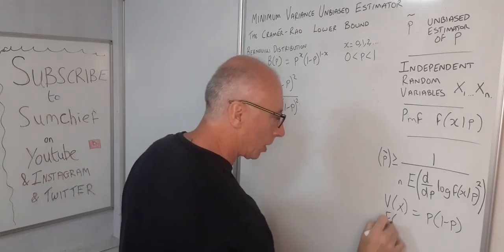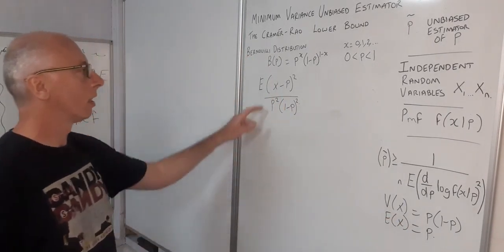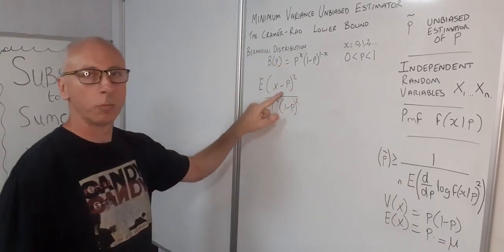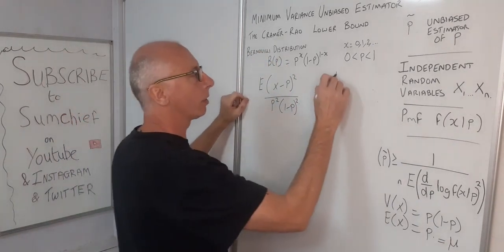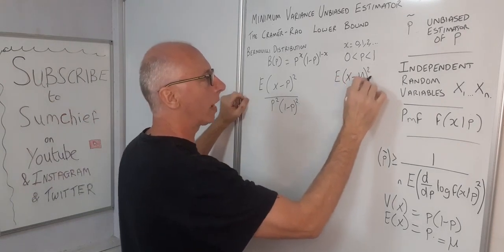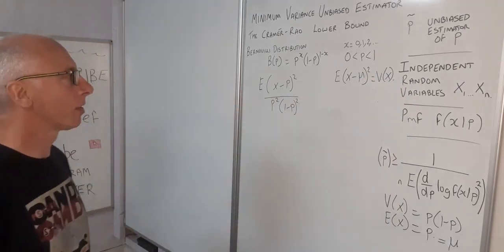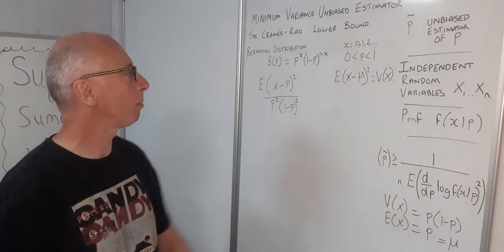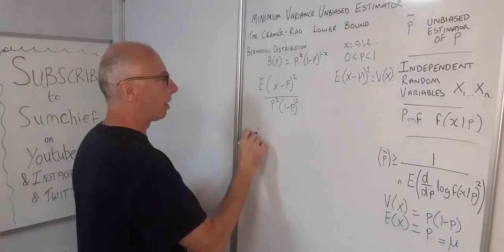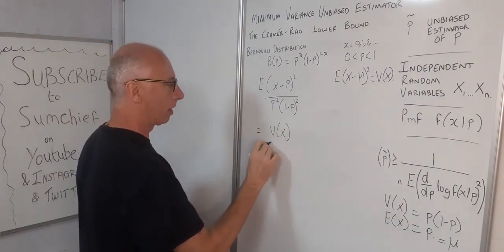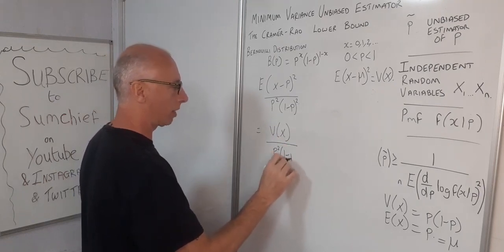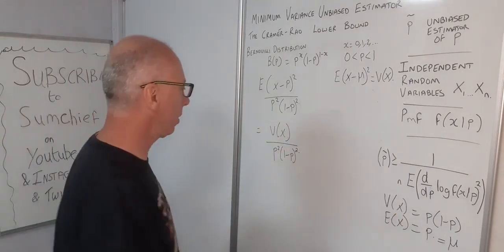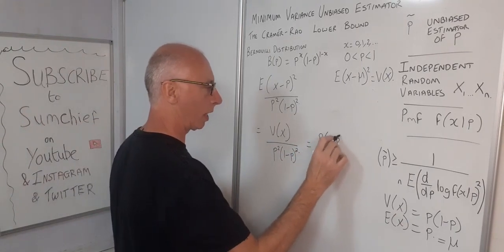We know that the expectation of X for the Bernoulli distribution is P, so E of X minus P is E of X minus Mu. The expression E of X minus Mu squared is the definition of the variance. Since we're dealing with the Bernoulli distribution, the variance is P times 1 minus P. So we can rewrite the expectation as the variance of X divided by P squared times 1 minus P squared, which equals P times 1 minus P divided by P squared times 1 minus P squared.